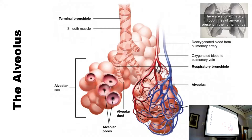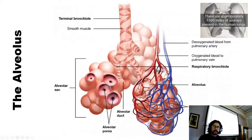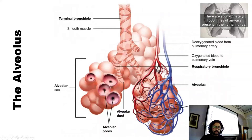They've got blood vessels around them. We've got capillaries forming around them, and those capillaries carry deoxygenated blood — blood which is low in oxygen and probably has a high amount of CO2 in it. What happens is the deoxygenated blood picks up oxygen from the alveoli, and then that oxygenated blood is returned back to the left atrium of the heart. Then it goes into the left ventricle and it's pumped to the rest of the body. Every single alveolus will have capillaries which allow that gaseous exchange to take place.